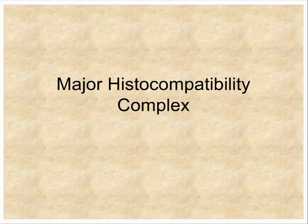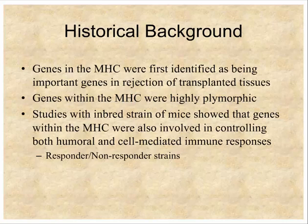The first topic is the major histocompatibility complex and the TCR. The major histocompatibility complex was first identified as a set of genes involved in tissue rejection or transplantation. When transplanting tissues between different people, or in laboratory animals between different mouse strains, the tissues were rejected. When they mapped the genes encoding that ability to reject tissues, they mapped to an area that became known as the MHC or major histocompatibility complex.